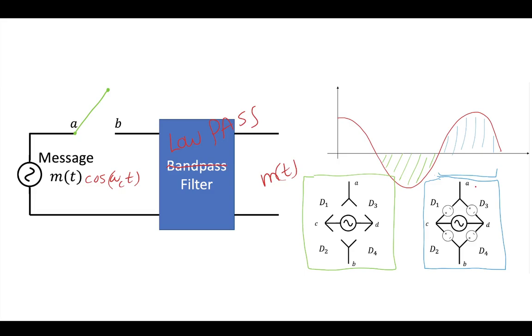For the ring modulator, same thing. You're a receiver receiving a modulated message. Your switch goes up and down, and you pass it through a lowpass filter, and what's left is your message.